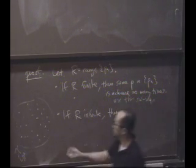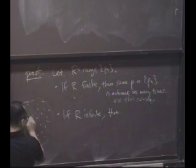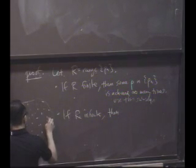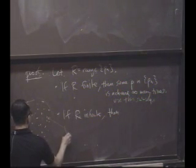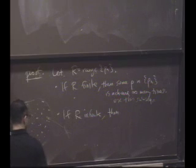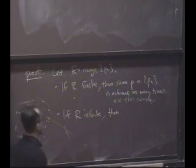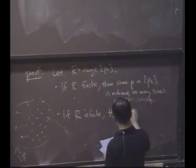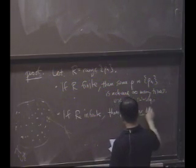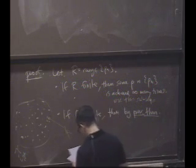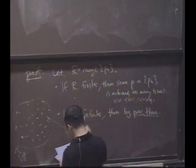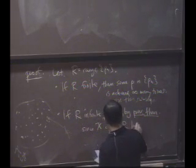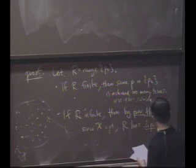And that's... Oh, interesting. So that means there must be some point that is accumulated on. One limit point. There's probably many, but there's at least one limit point. Okay. So if R is infinite, then by a previous theorem, in your book I think it's theorem 2.37, but we showed it in class too. If R is infinite, since X is compact, R has a limit point. Let's call it P.